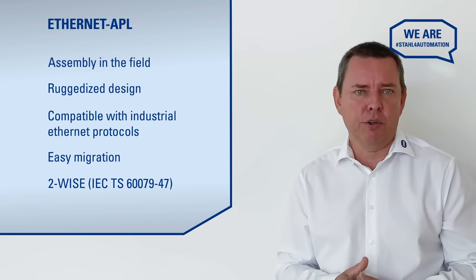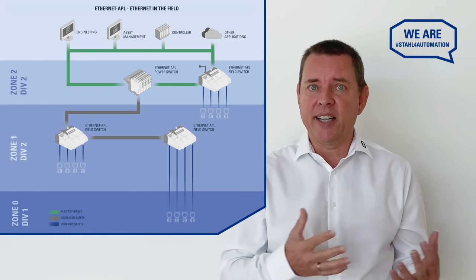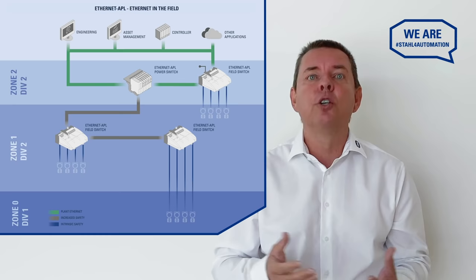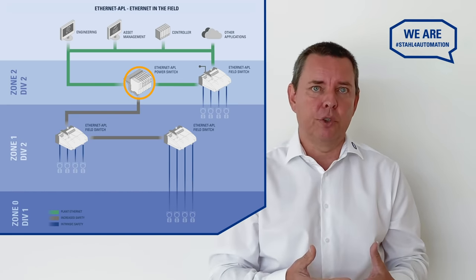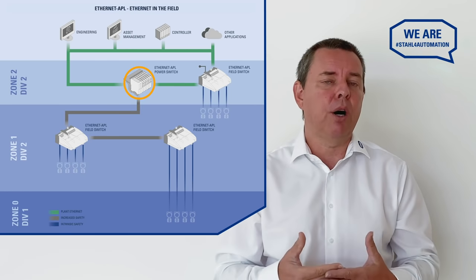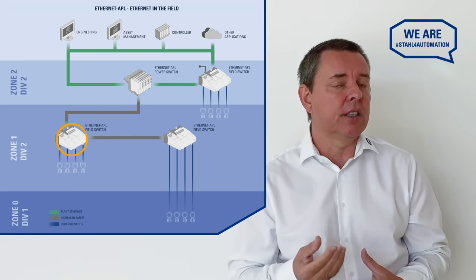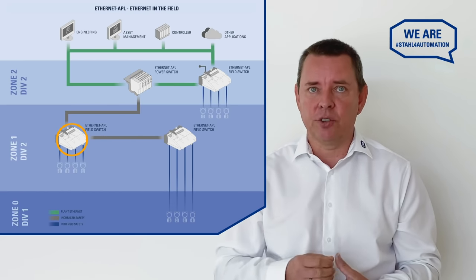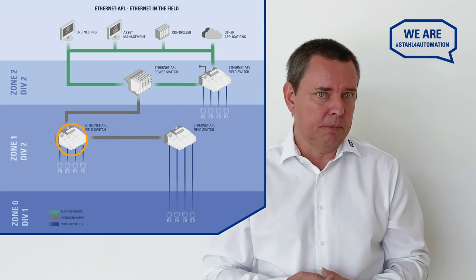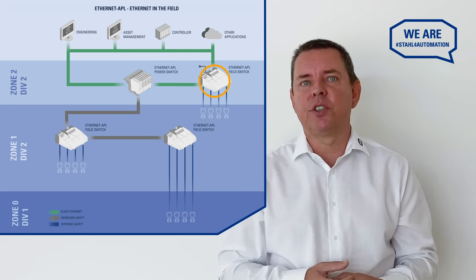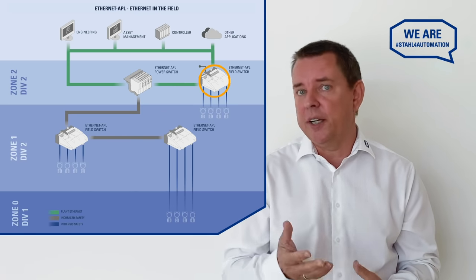What makes Ethernet APL so powerful is its support for various topologies, from the classical trunk and spur known from fieldbus, to star topologies. The Ethernet APL power switch converts four-wire networks to two wires and can power up to approximately 50 field devices, including Ethernet APL field switches in the hazardous area, which connect the field devices to the network by intrinsic safety. Ethernet APL field switches can also be installed in a standard four-wire Ethernet network, say in your control room.